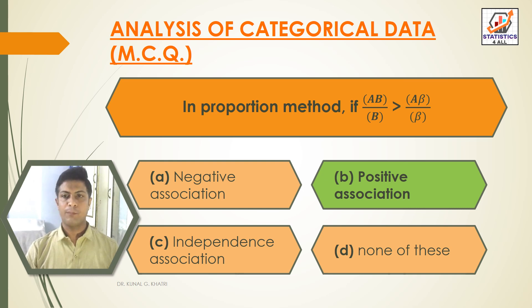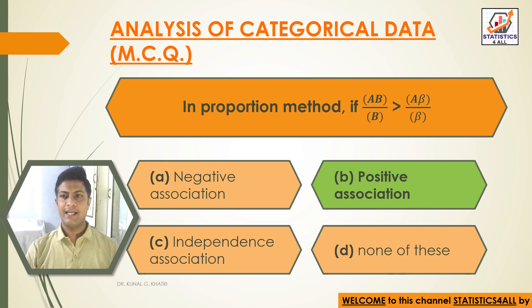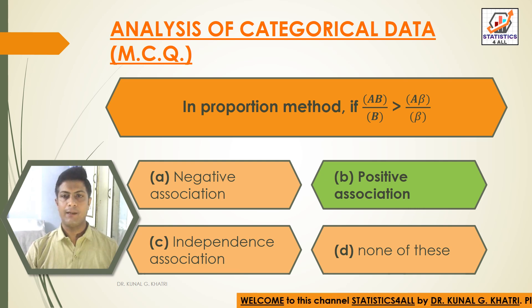In the proportion method, if AB divided by B is greater than Aβ divided by β, it indicates positive association.